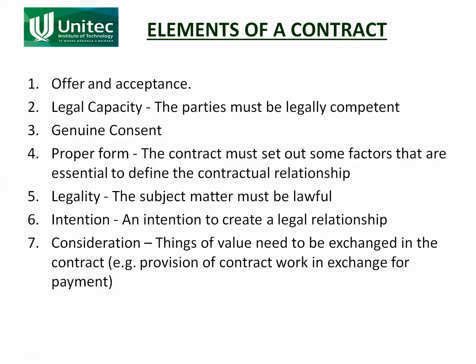The last element is consideration. Things of value need to be exchanged. For an engineering contract, typically the contractor builds a road, building, pipeline or whatever — which is something of value — and the client, the principal, pays them money — which is also something of value. There's no reason the payment has to be money; it could be goods. If you want to swap your car with your mate, you're swapping goods — they're both things of value, and you've entered into a contract relationship.